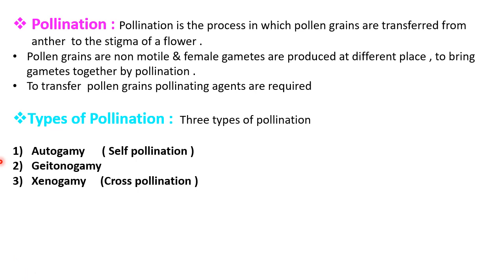Now we will learn about the process of pollination. Pollination is a process in which pollen grains are transferred from the anther to the stigma of the flower. Since pollen grains are non-motile and female gametes are produced at different places, pollination is necessary to bring male and female gametes together. To transfer pollen grains, pollinating agents are required. Depending upon the mode of transfer, pollination is of three types.